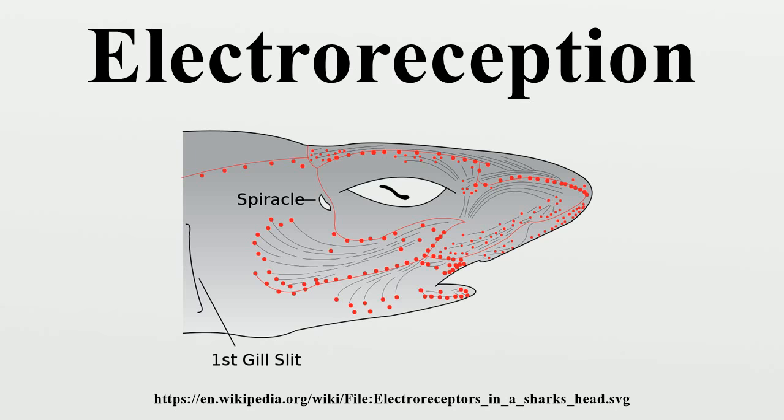The monotremes are the only group of land mammals known to have evolved electroreception. While the electroreceptors in fish and amphibians evolved from mechanosensory lateral line organs, those of monotremes are based on cutaneous glands innervated by trigeminal nerves. The electroreceptors of monotremes consist of free nerve endings located in the mucous glands of the snout.